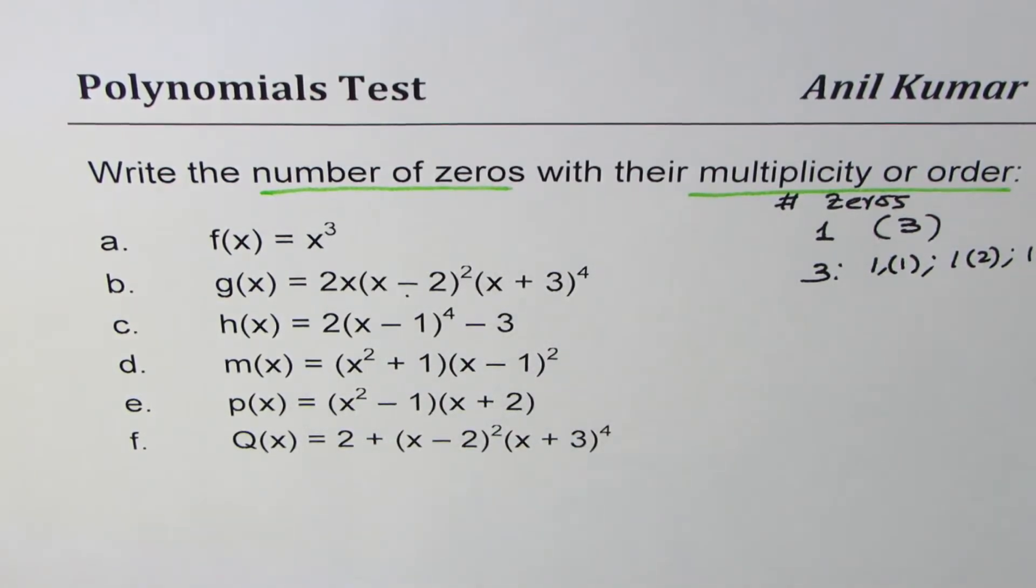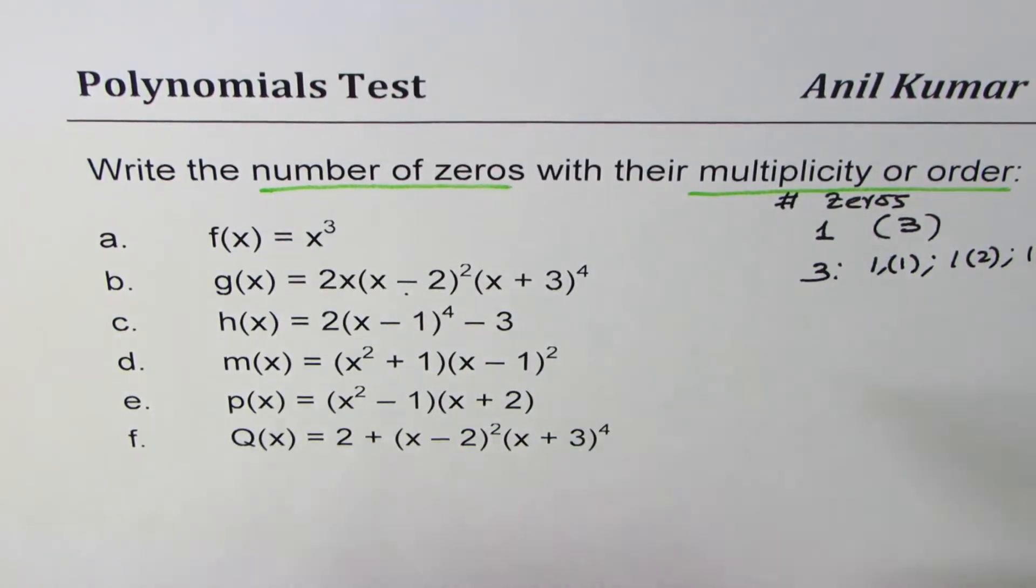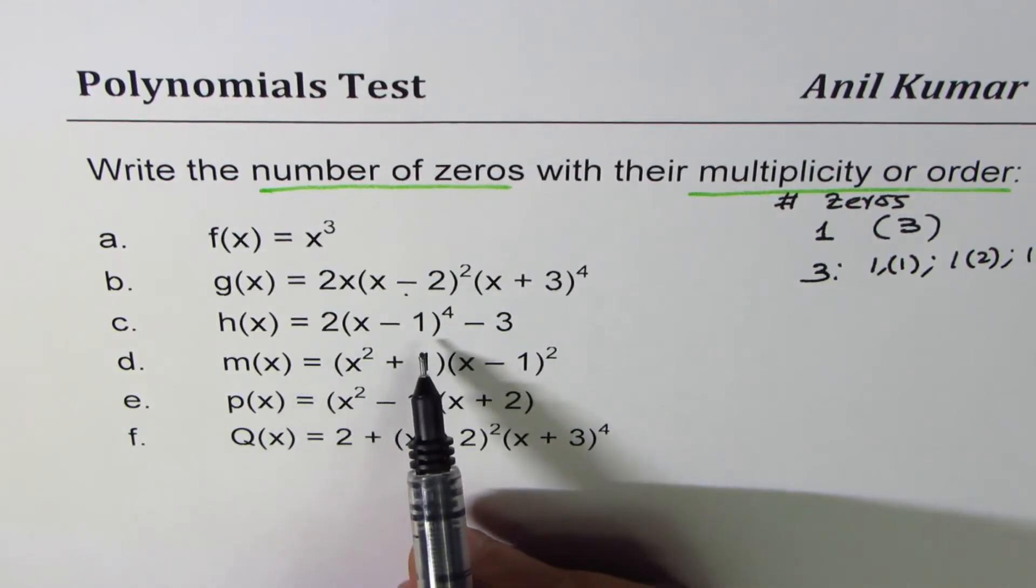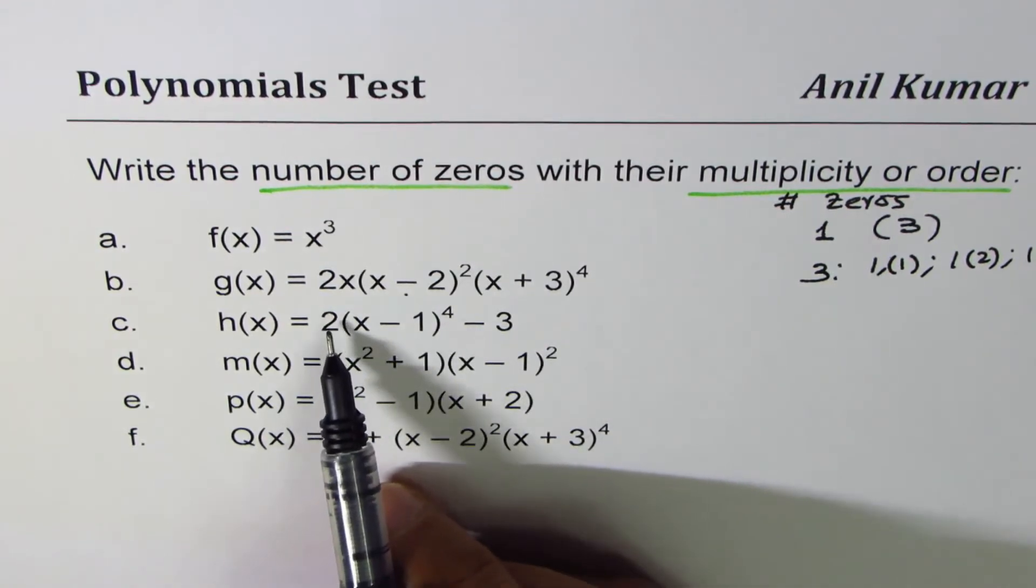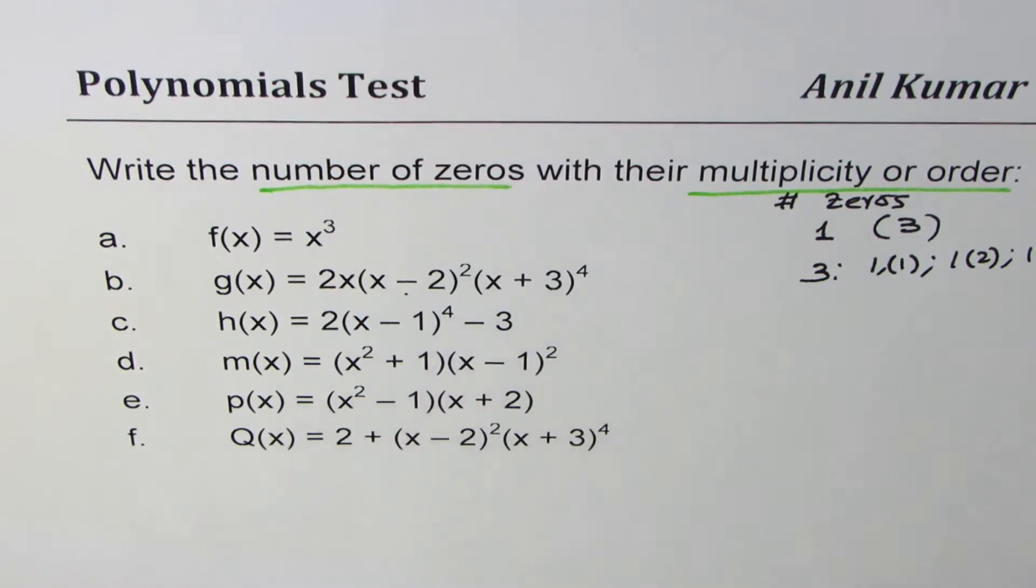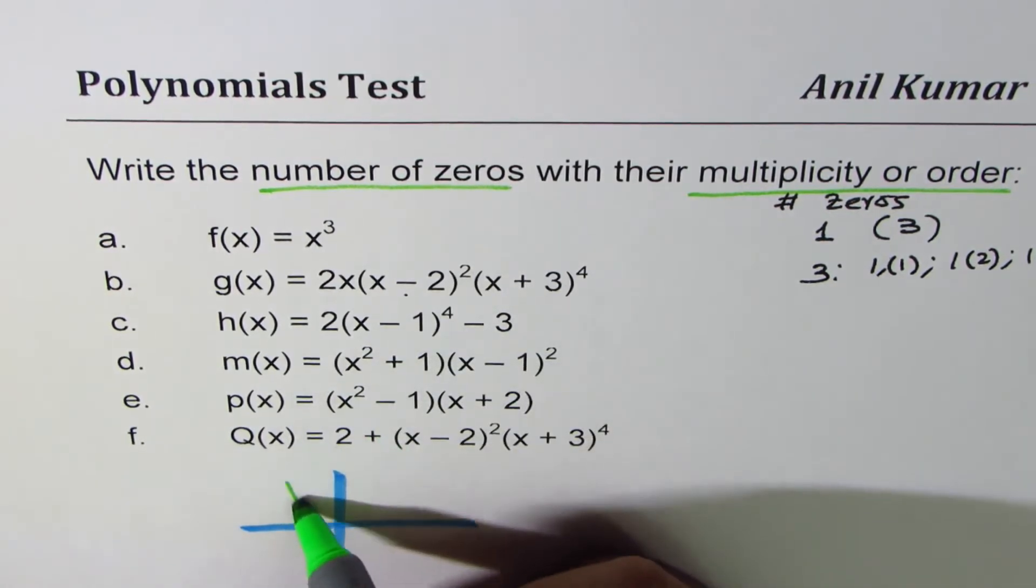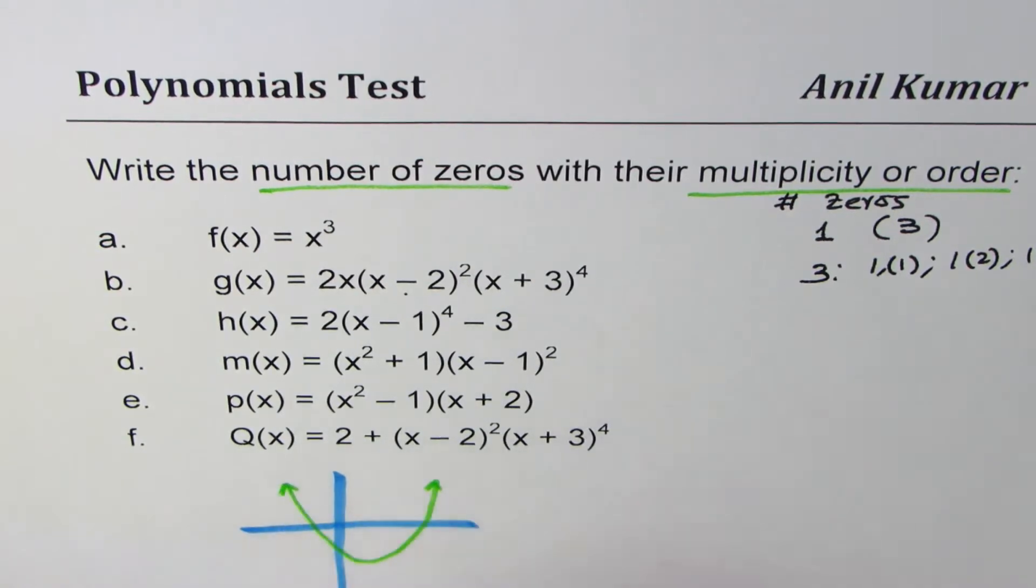Next one here is 2(x-1)⁴ - 3. Now that's kind of interesting. Now if you try to sketch this function, you will get a function which is kind of like this.